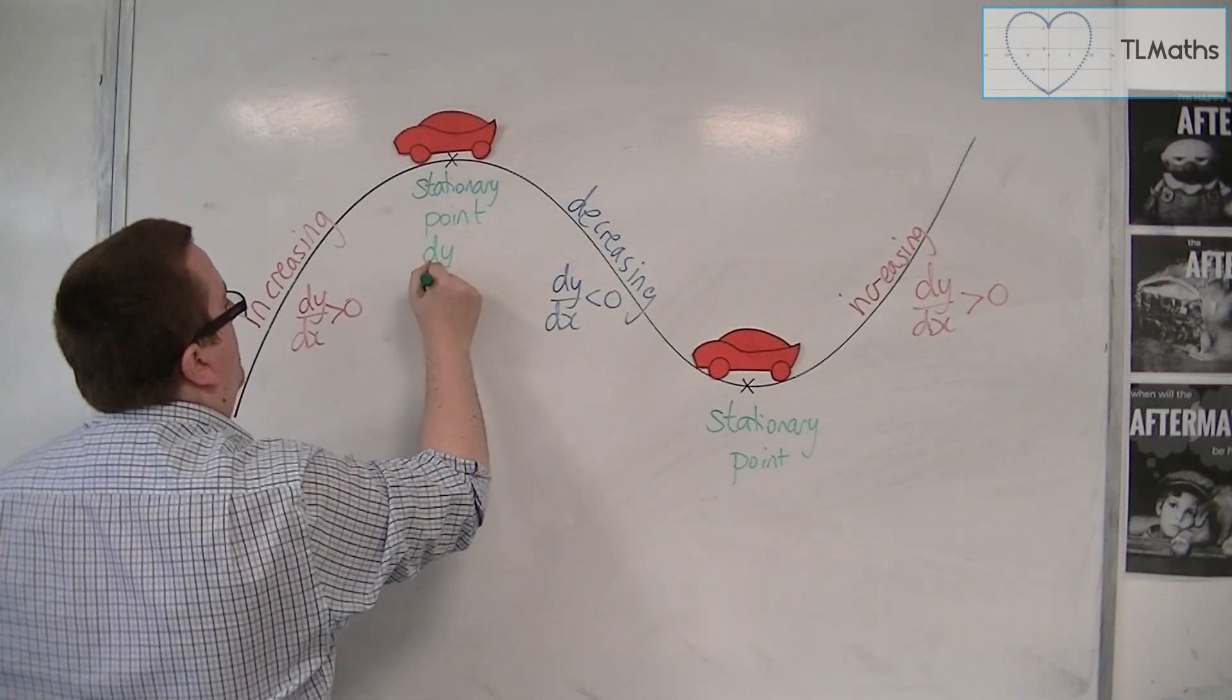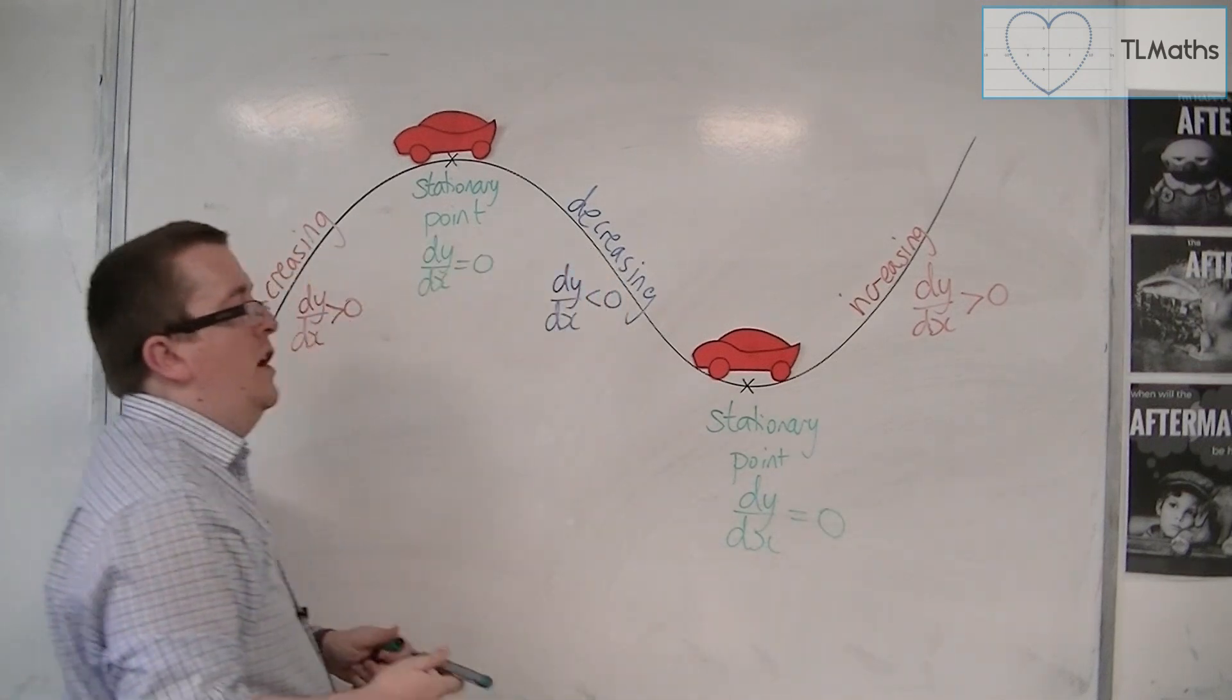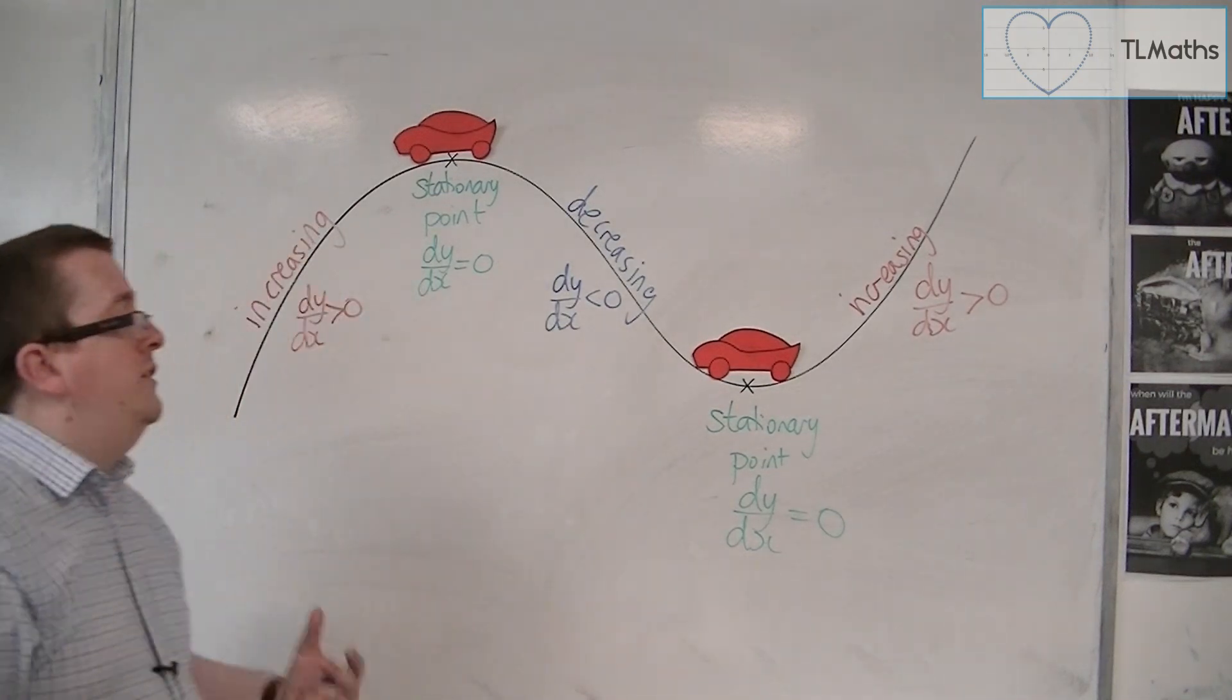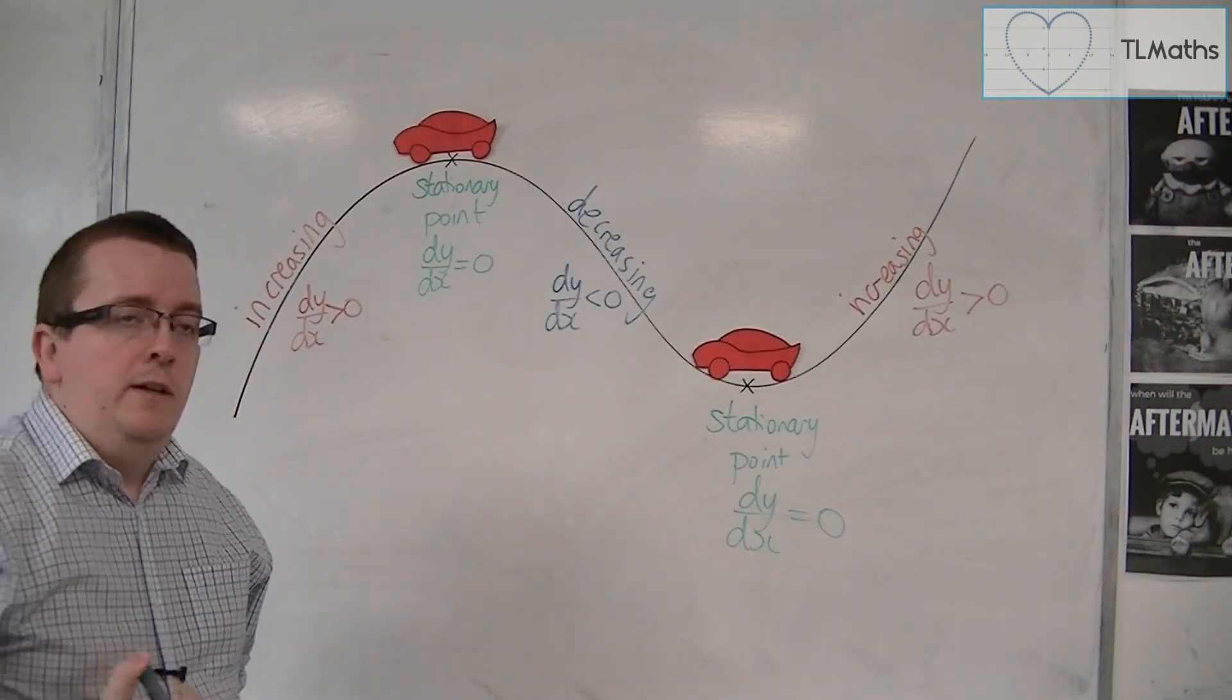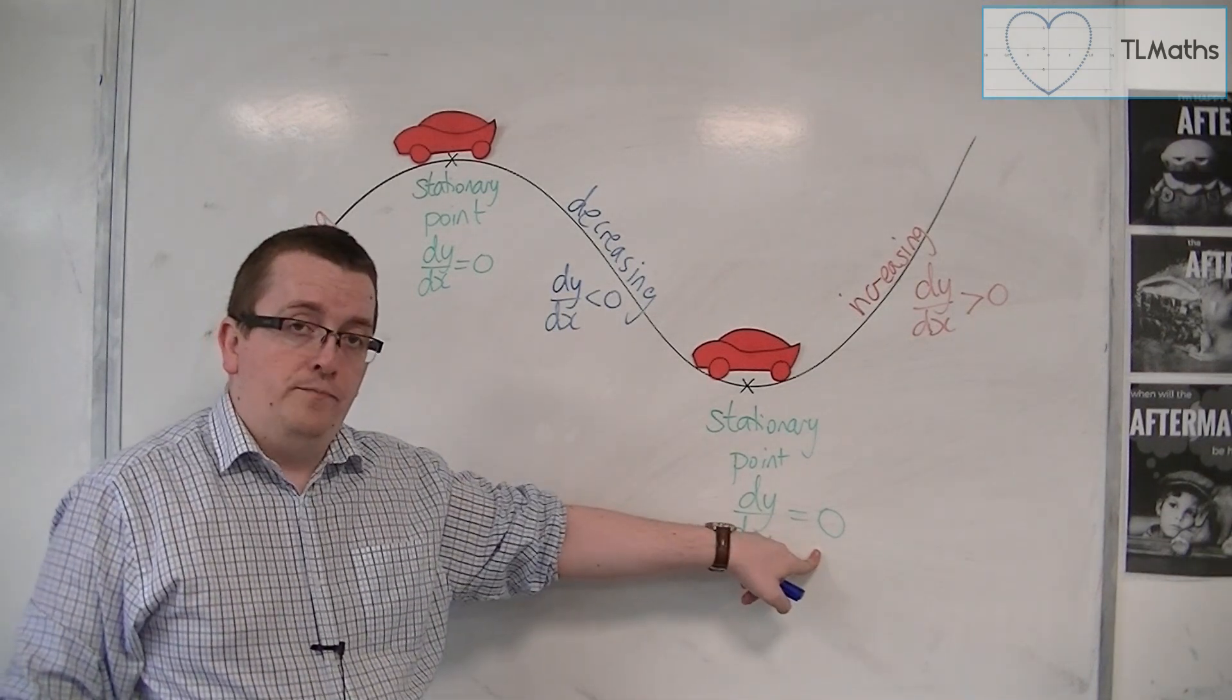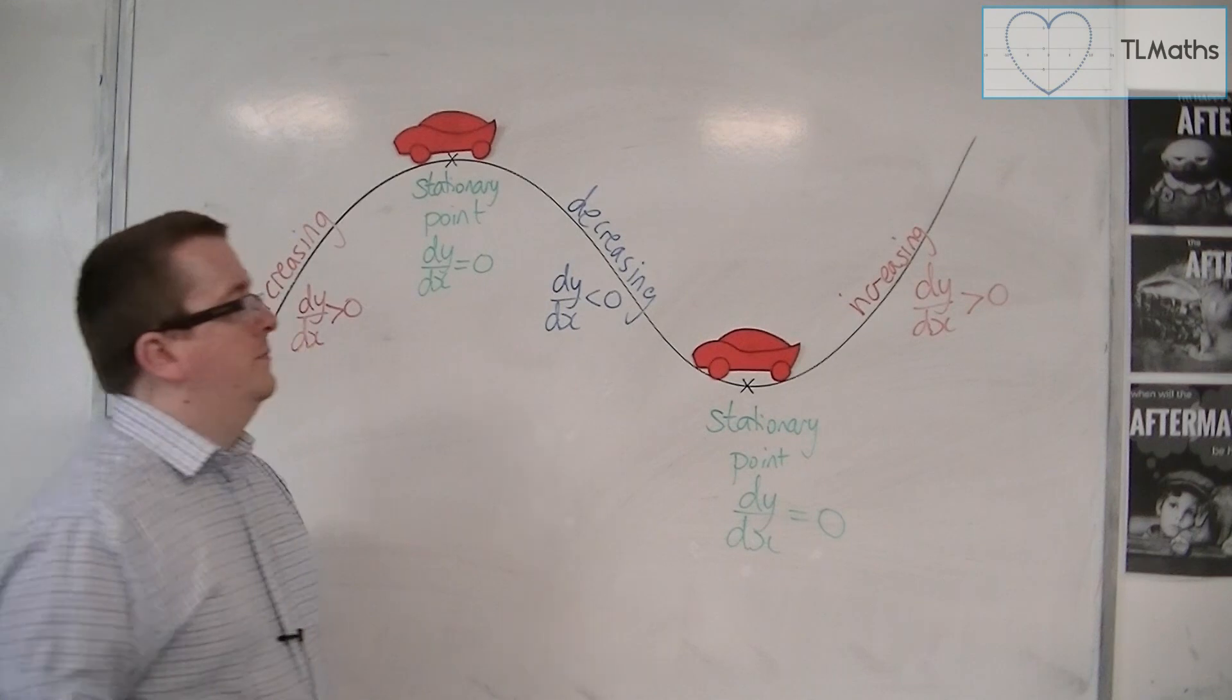Okay, so that means that at the stationary point, dy by dx is 0. And knowing that, knowing that the gradient is 0 at stationary points, will allow us to find the coordinates of the turning points of a curve. Because we would then be able to differentiate, put what we get equal to 0, and then solve that equation. And that will find me those points.